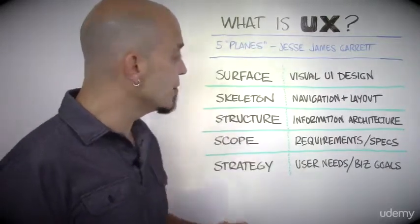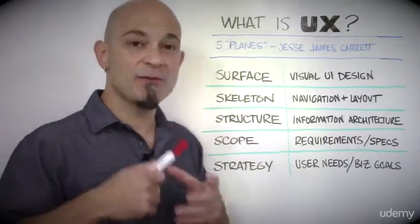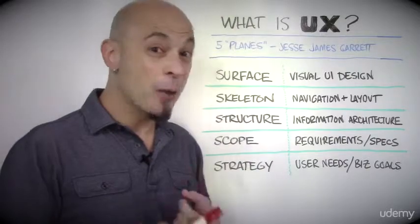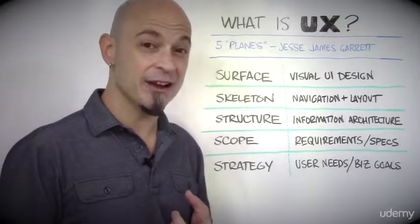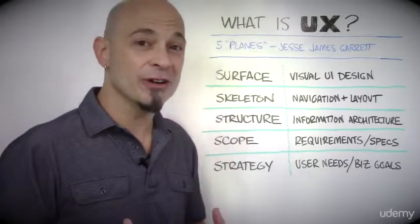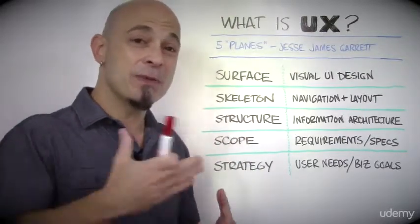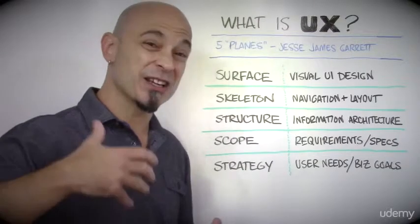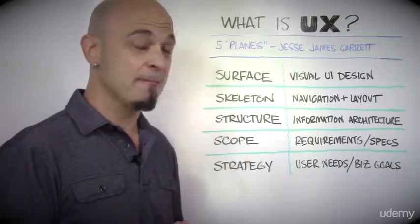From there, you go to structure, which is information architecture and content. How much of it is there? How is it organized? How is it prioritized? How are people going to move through it? What's it going to be called? What's it going to be labeled?